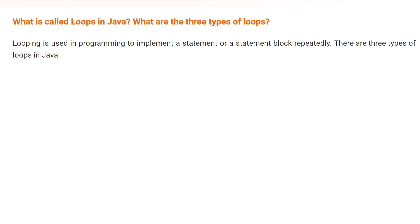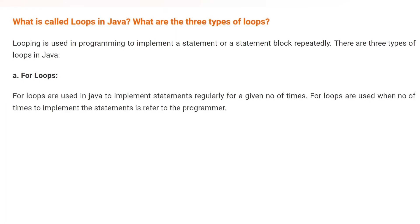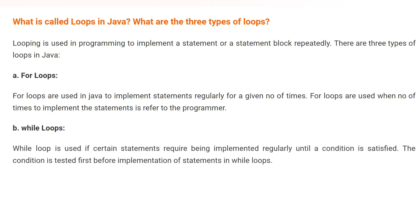There are three types of loops in Java. The first one is the for loop. For loops are used to implement statements for a given number of times — if you know how many times you want to repeat the statements, you use a for loop. The second one is the while loop, which is used if certain statements need to be executed repeatedly until a condition is satisfied.